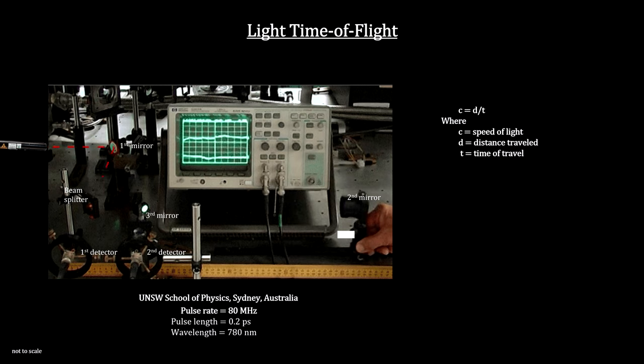The red lines show the beam path. The first mirror directs the beam to the beam splitter. The beam splitter directs half the beam to the first detector and the other half to the second and third mirrors before arriving at the second detector.